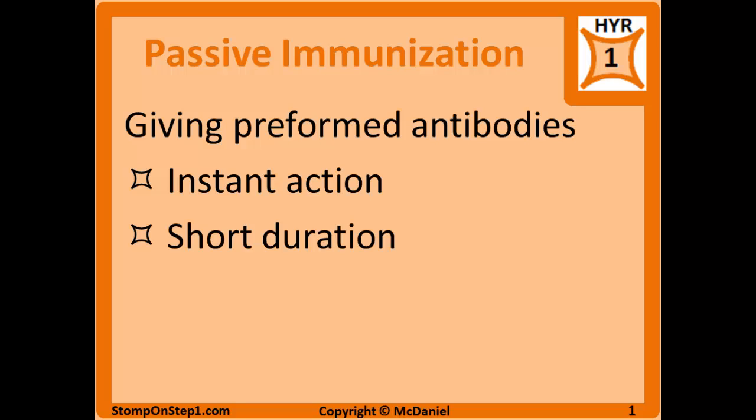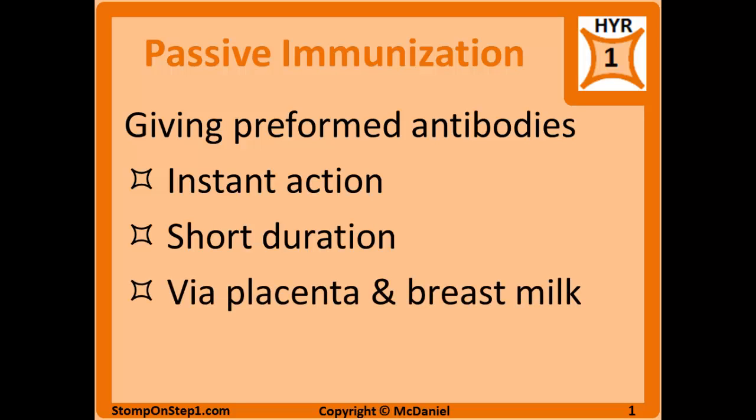However, passive immunity has a short duration of action because it only works for the lifespan of the transferred antibodies, which is usually about a few weeks. There are natural examples of passive immunity, specifically with infants. Breast milk has IgA that is transferred from the mother to the infant to give them mucosal immunity. Similarly, IgG is transferred from the mother to the fetus through the placenta. Through these mechanisms, an infant that does not yet have a mature immune system can be protected from pathogens.